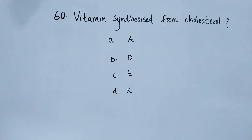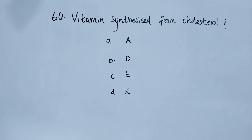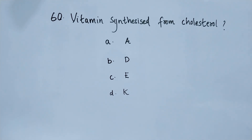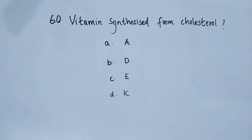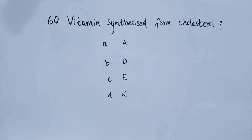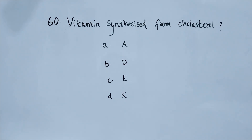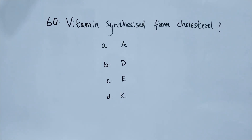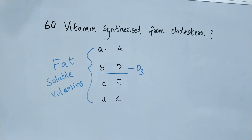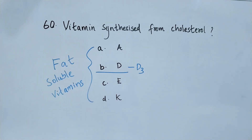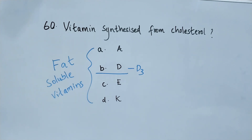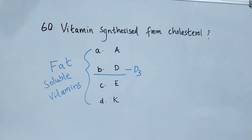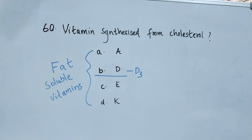Question number 60. Which of the following vitamins is synthesized from cholesterol? Option A vitamin A, option B vitamin D, option C vitamin E, option D vitamin K. The right answer is option B. Vitamin D is synthesized from cholesterol. Vitamins A, D, E, and K are fat-soluble vitamins.